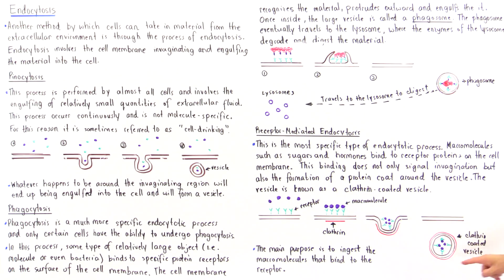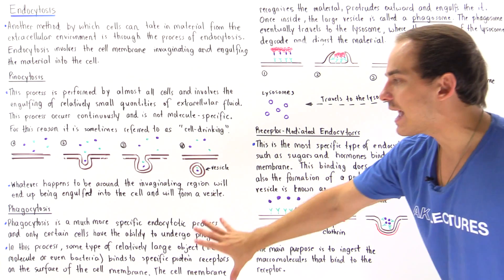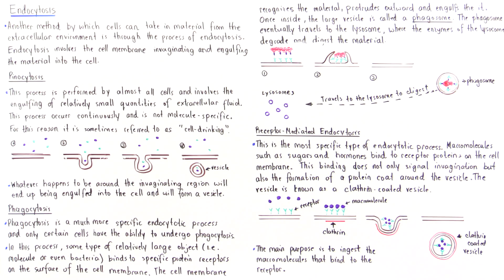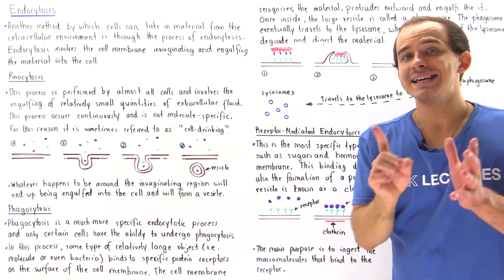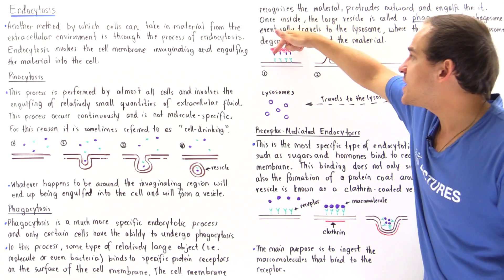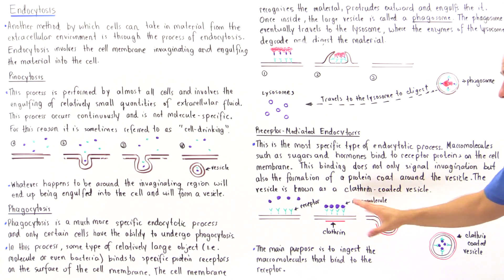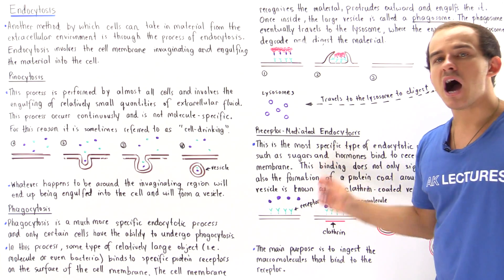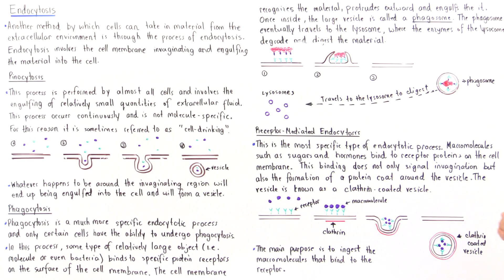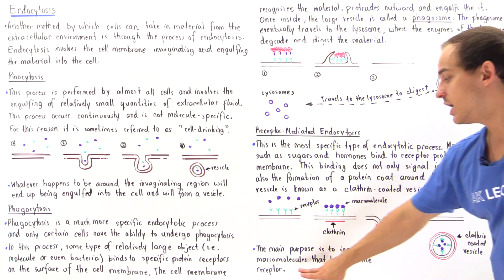The protein inside this covering is called clathrin, which is why the resulting vesicle is called a clathrin-coated vesicle. There are two main differences between phagocytosis and receptor-mediated endocytosis: in phagocytosis, the phagosome does not have a protein covering, whereas in receptor-mediated endocytosis it does. Additionally, in phagocytosis the bacterium binds indirectly to the cell membrane through receptors on the bacterium itself, whereas in receptor-mediated endocytosis the molecule being ingested binds directly to receptors on the cell membrane.